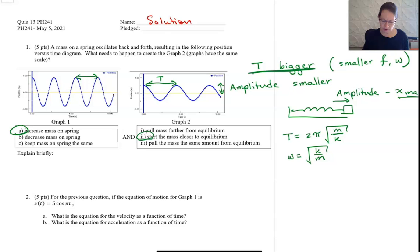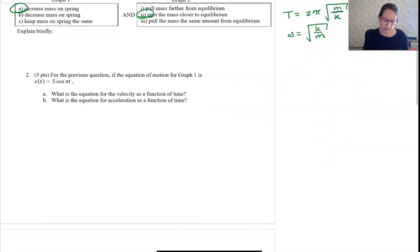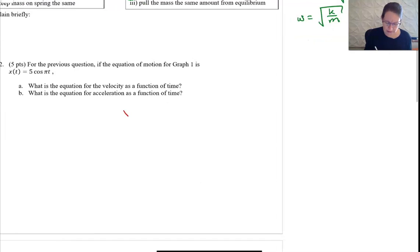For this one, the equation of motion - this is about taking derivatives. Your velocity is just the derivative with respect to t of 5 cosine πt.